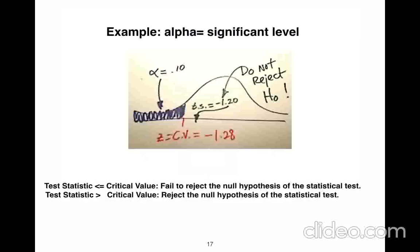And t-test, you know, alpha is significance level. So if test statistic is less than or equal to critical value, it fails to reject the null hypothesis of the statistical test.